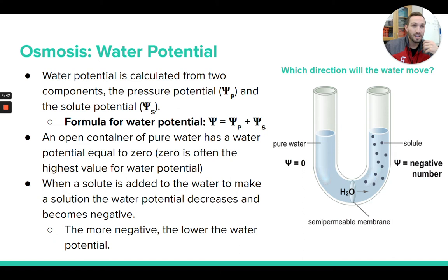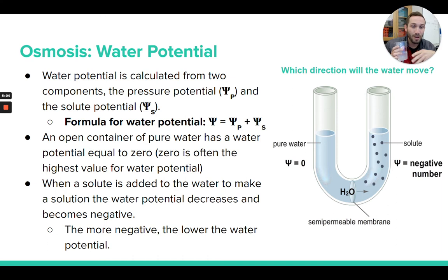The interesting part is that zero is actually a really high water potential. That's because water potential values are usually always negative. When you have a water potential of zero, that's always going to be greater or higher than any negative water potential. Zero is always going to be higher than negative values, so zero is actually a high water potential — higher than any negative number.